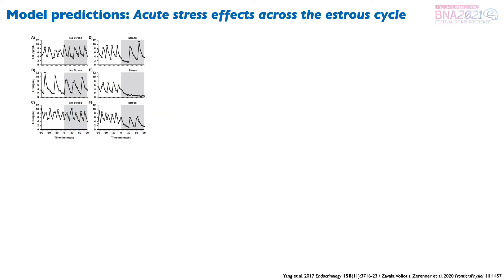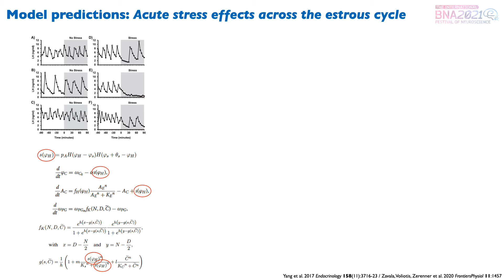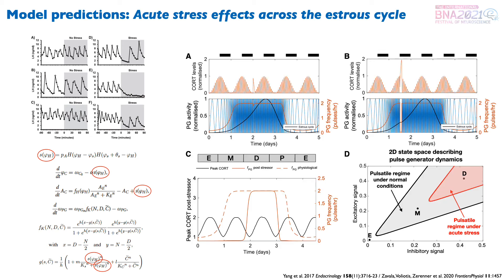Next, we wanted to test the effects of acute stress on the estrous cycle. While the LH recordings in these experiments lasted only a few hours, we can perform computer simulations that last as long as we want. So what we did was to mathematically model an acute stressor as the product of two Heaviside functions that affect the phase and amplitude of the cortisol rhythm, as well as the frequency of the pulse generator via the KNDy network. Then we performed repeated simulations of this acute stressor given at different time points across the estrous cycle.